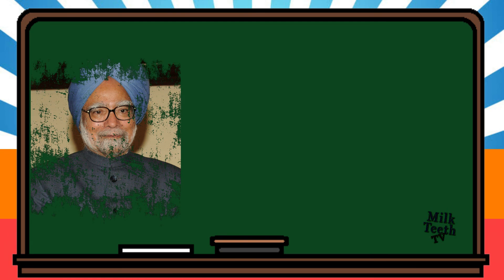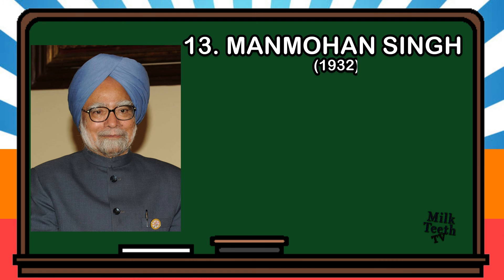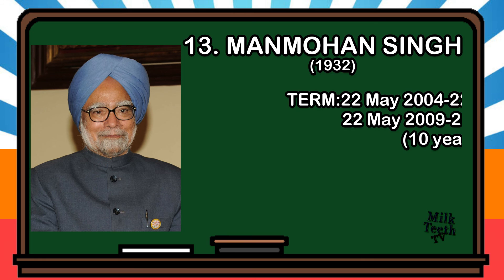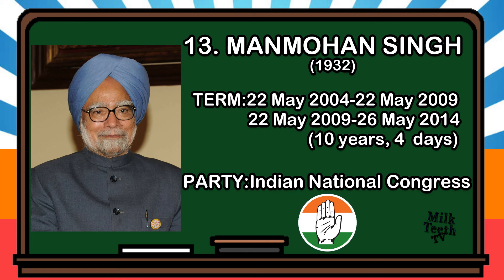The thirteenth Prime Minister of India was Dr. Manmohan Singh. He was born in 1932. He is an Indian economist and politician who is the first Prime Minister since Jawaharlal Nehru to be re-elected after completing a full 5-year term. His term began on 22nd May 2004 and ended on 26th May 2014, for a complete period of 10 years and 4 days. Party: Indian National Congress.